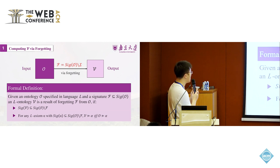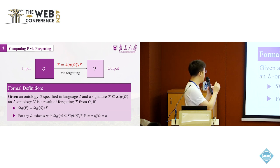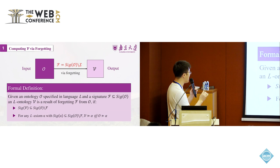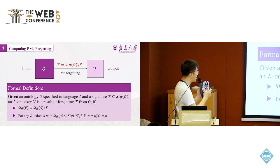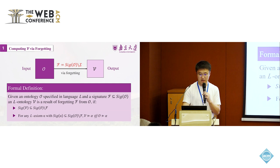The second, which is the most important one, is for any L axiom alpha with its signature inside the original signature of the original ontology minus F, and for any such alphas, if V entails alpha, then O entails alpha, and vice versa. So this is an if and only if condition.